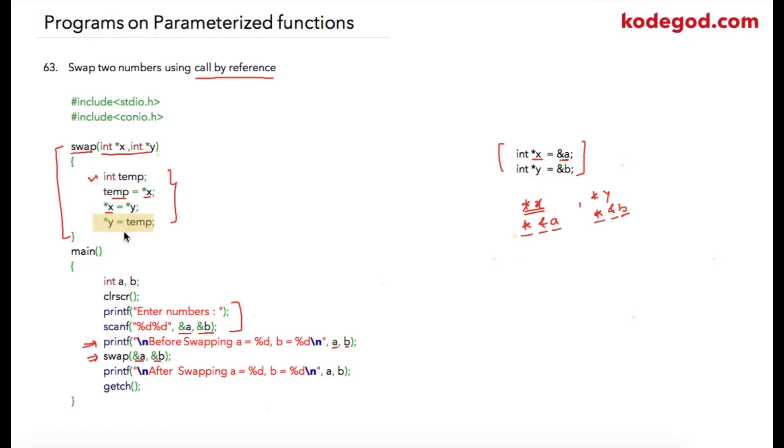And then star y is equal to temp. So in this statement, value of b will be stored at a, and because we have already stored value of star x (that is a) into temp, hence value of temp will be stored at star y (that is b). So b is equal to temp, using three statements.